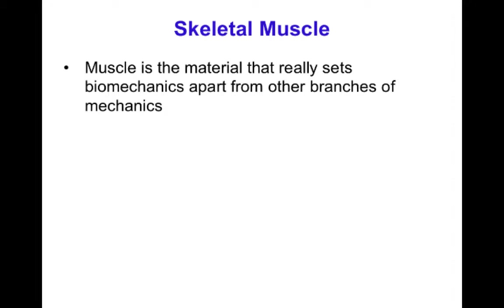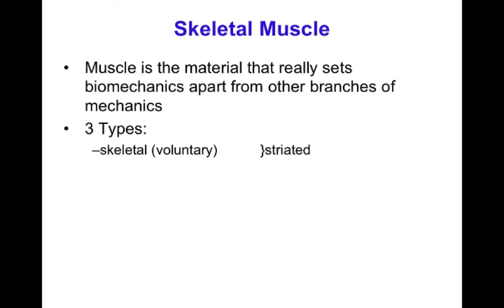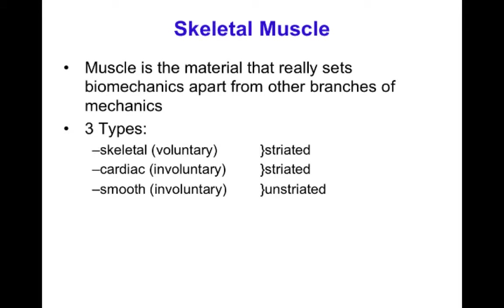Muscle is one of those tissues that sets biomechanics apart from other branches of mechanics, and to me is one of the most interesting cell and tissue types to study in biomechanics. There are three types: skeletal muscle, which is striated and voluntary; cardiac muscle, which is striated but involuntary; and smooth muscle, which is involuntary and not striated.